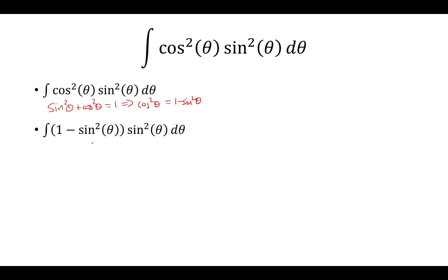Now we can multiply the sine squared to the 1 and the negative sine squared, so we have sine squared minus sine to the 4th.